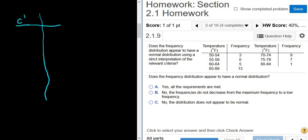So here we have the classes. Okay, that's the temperatures. And then I'm not going to write them down, I'm just going to write down the frequencies. So 3, 0, 5, 13, 9, 7, 1.